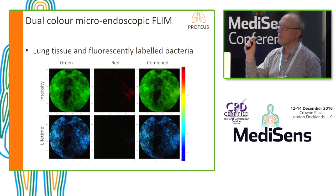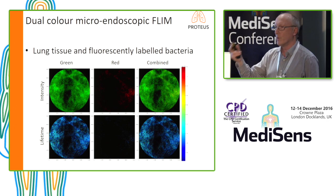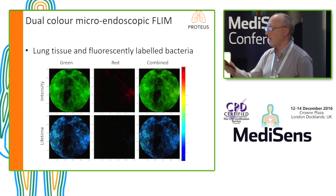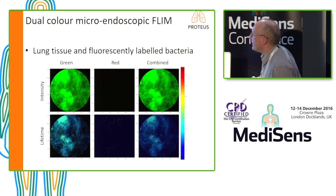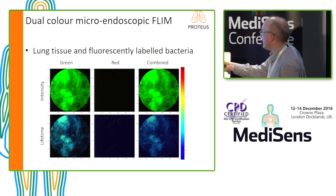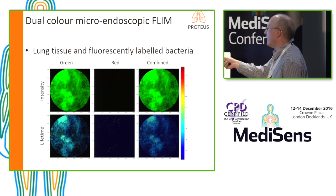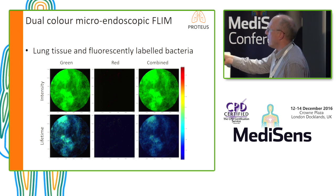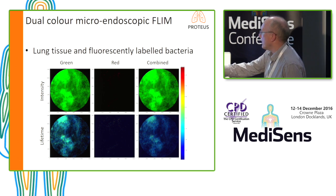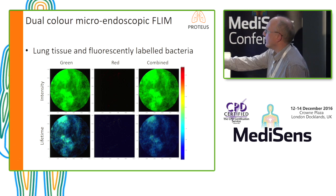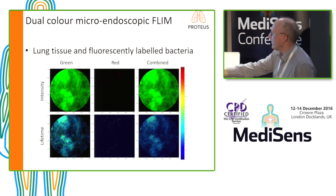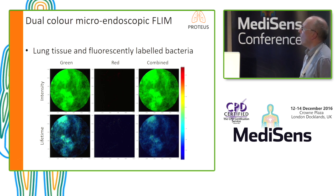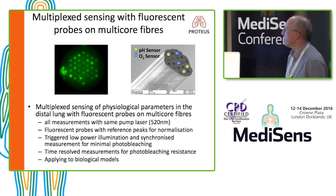Here, in two colour channels, we have fluorescently labelled bacteria — we can tell the difference between gram-positive and gram-negative bacteria by the shift of the fluorescence lifetime, using specifically designed fluorescent probe molecules from the chemistry team in Edinburgh. The enhancement of contrast in the image is then colour-coded as a fluorescence lifetime shift on the background — and you can clearly see areas of bacteria in that lung image.